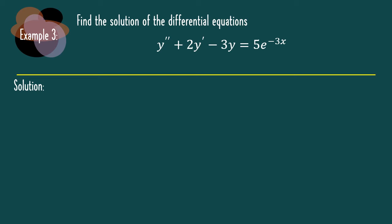For example 3, find the solution of this differential equation: y double prime plus 2y prime minus 3y equal to 5 exponent minus 3x. Our function f(x) is equal to an exponent. So if we refer to our table, if our function is an exponent c exponent ax, then yp will become another constant d exponent ax multiplied with x to the power of s.